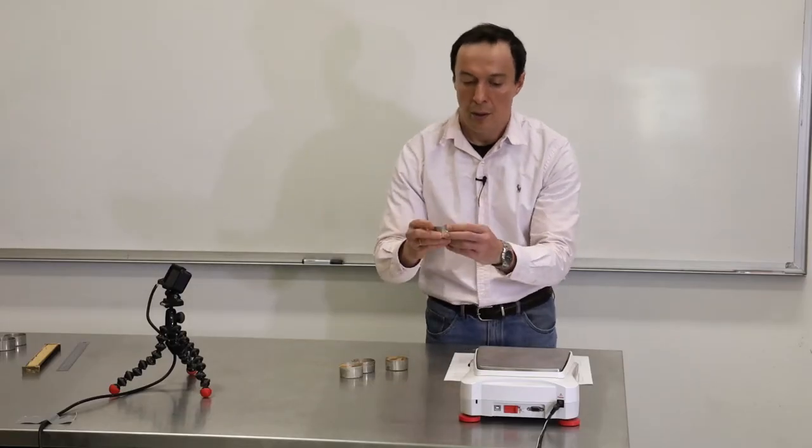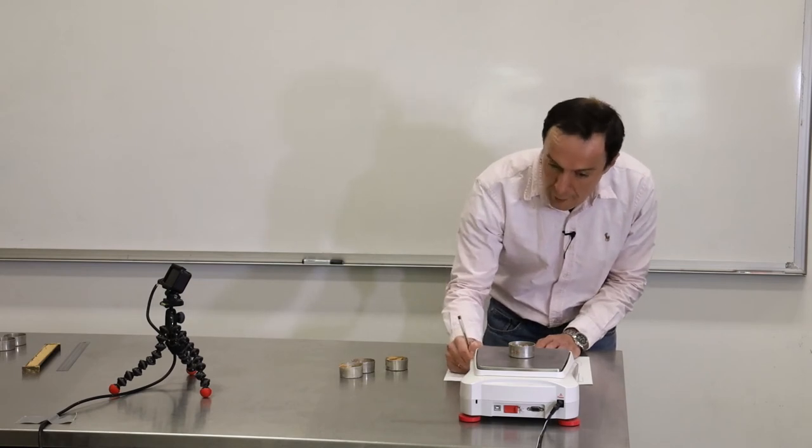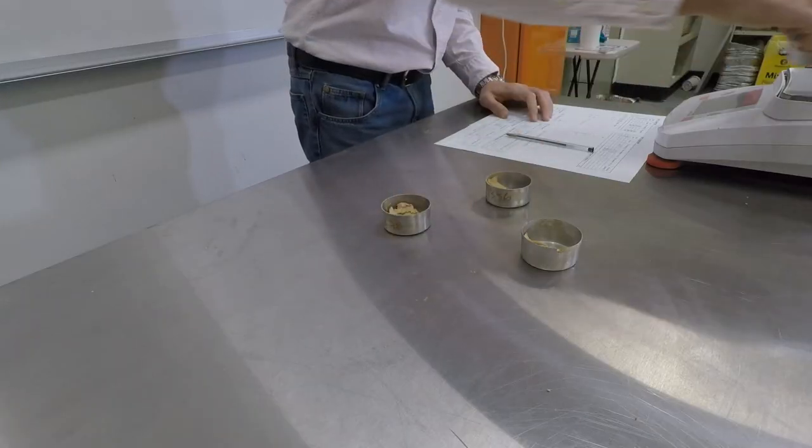We'll start with tin number one and record the dry sample mass. Then we'll go with tin number two.